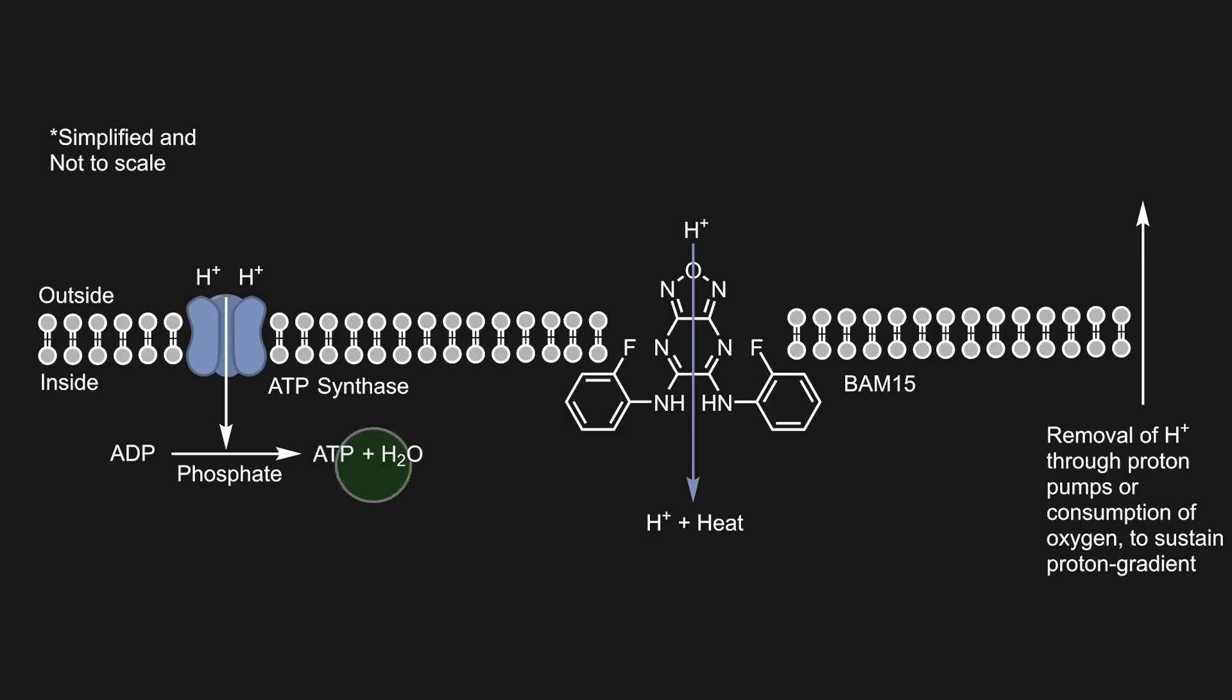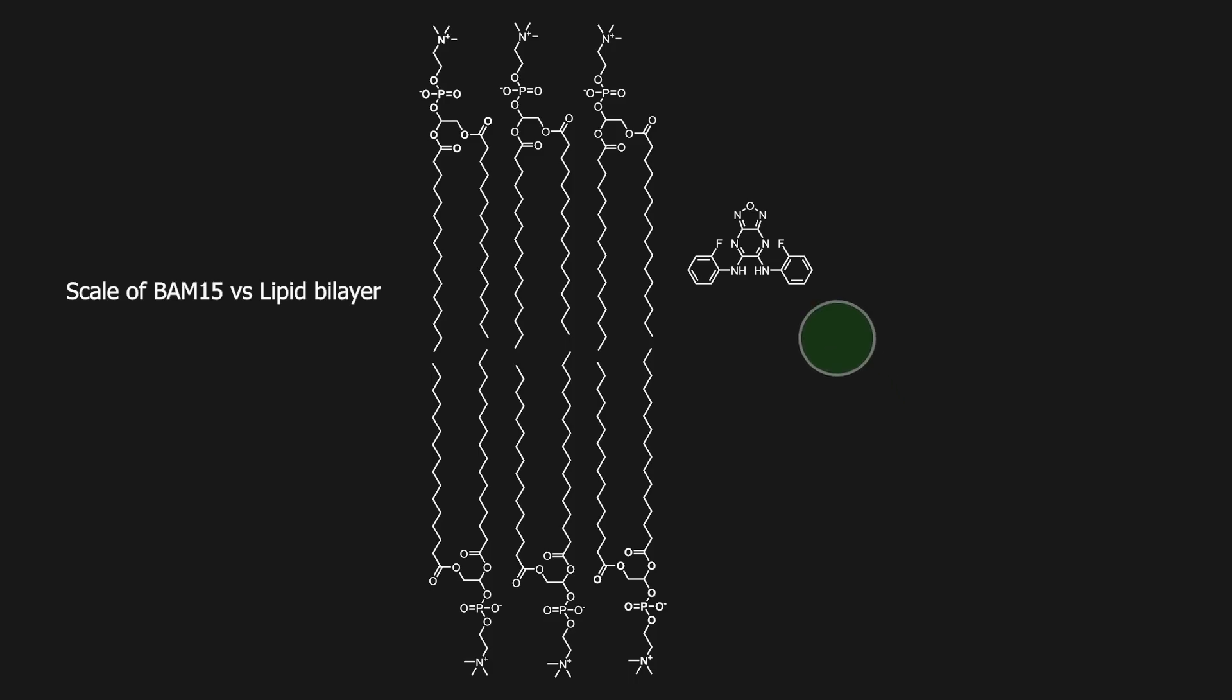Mitochondria themselves also have uncoupler proteins to produce heat this way, but this process is very controlled. BAM-15 molecules likely band together in large numbers and form some sort of macro structure, as one molecule is not sizable enough to penetrate the lipid bilayer, but to draw that is very difficult, and I doubt it is fully known.